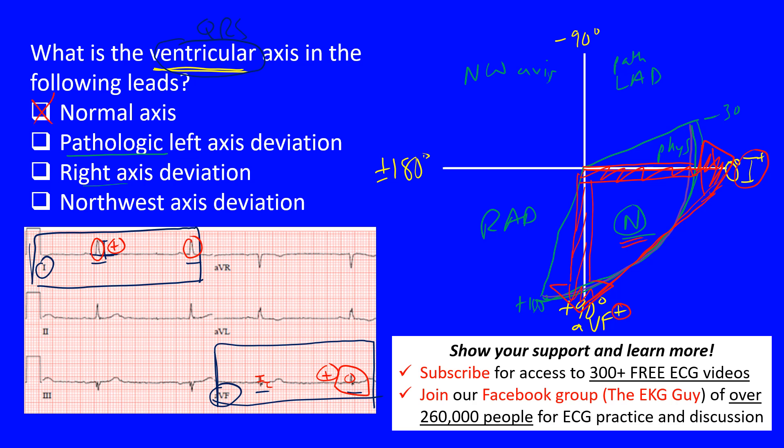Another lead that's helpful to look at is lead II. Lead II sits here at positive 60 degrees, so lead II's positive end is at positive 60 degrees. If you look at lead II on our ECG, it's this one here. You can see these are mostly upright positive complexes, meaning that we'll go towards the positive end of lead II, confirming that our axis lies within this region.